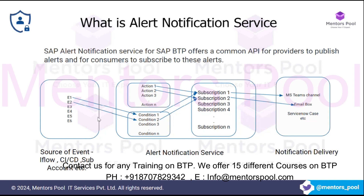In this case, Integration Suite would be the source of the event, and you have to integrate it with your Alert Notification Service. In Alert Notification Service you will create a condition for that particular event, and also create some actions. Then a subscription will be created which will send the notification to the target system. When creating the subscription, you select whether it should send to Microsoft Teams, email, or a notification to a Teams channel if a particular condition happens and what action should be performed.